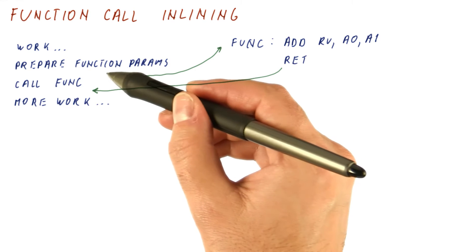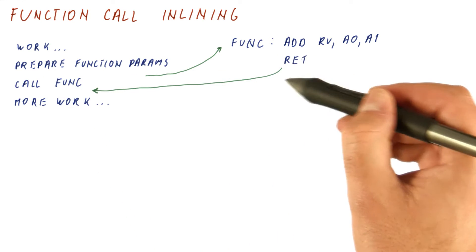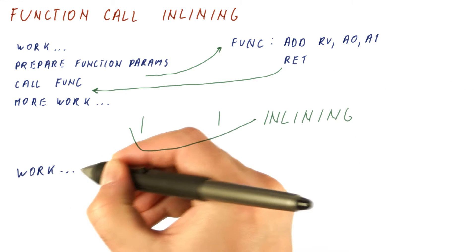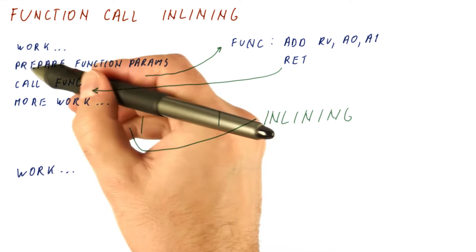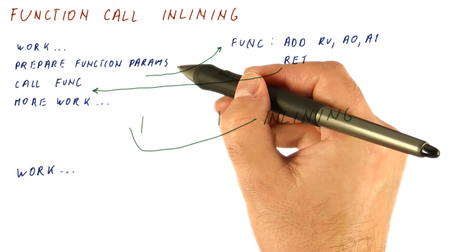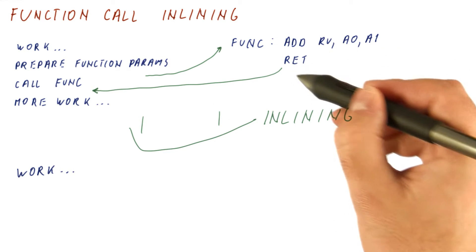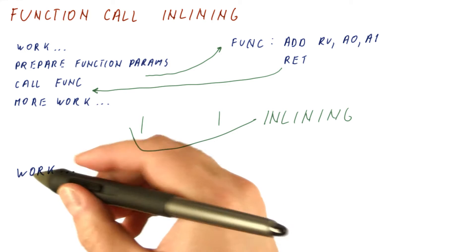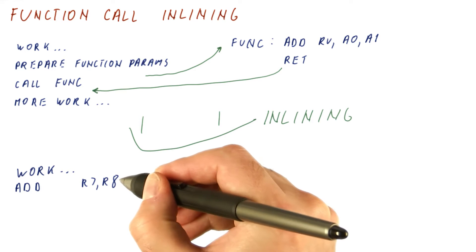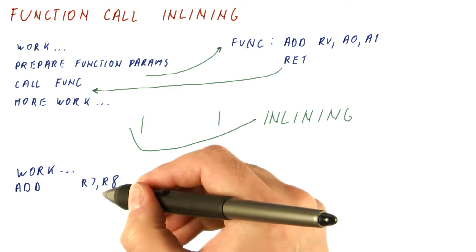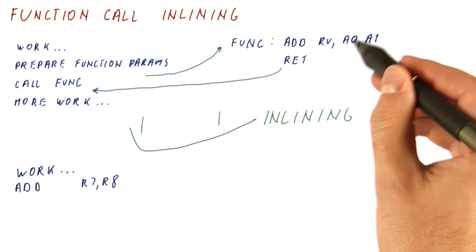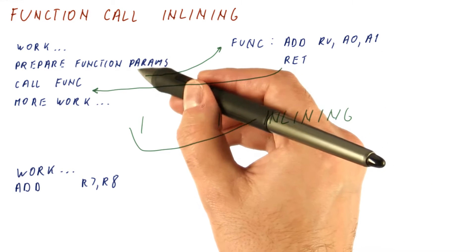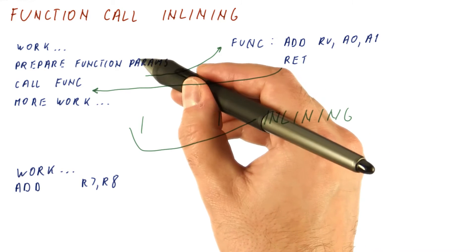Now we can try to avoid the overheads of calling the function and returning from it by doing our work. Then we don't have to prepare the function parameters anymore. What we do is simply take the work of the function and plug it in here. In this case, we add the registers that did contain the values we eventually ended up passing here, so we didn't need to copy these registers to A0 and A1.